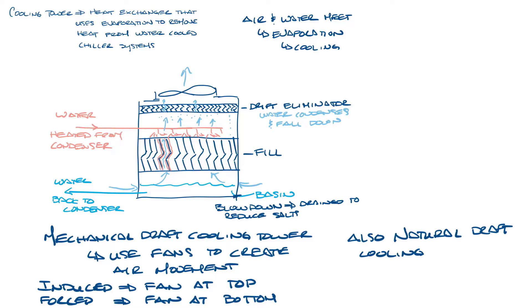There are also natural draft cooling towers that rely on the natural buoyancy of the warm air inside the tower to create the airflow, but these are primarily used for power generation. They don't use fans or blowers and are typically larger in size and taller in height to allow natural convection to draw air through the tower.